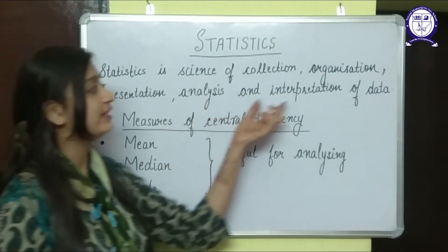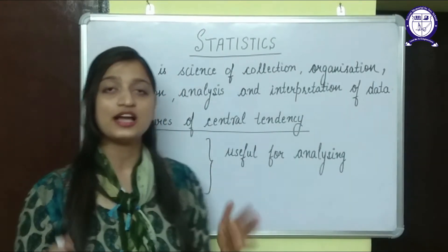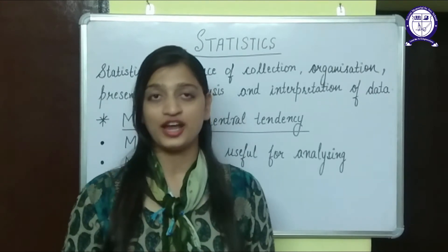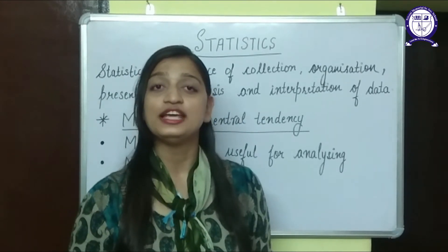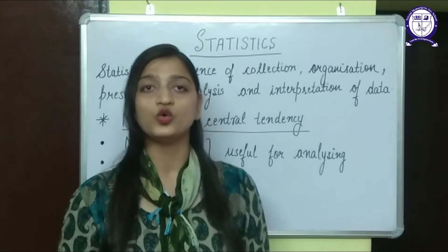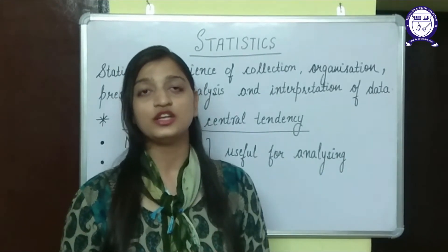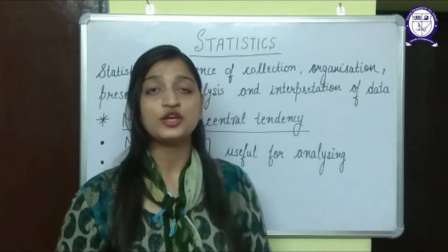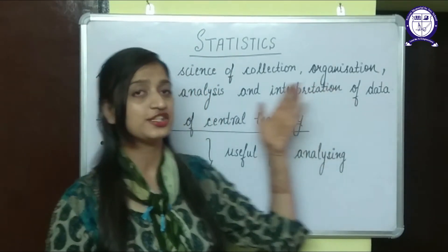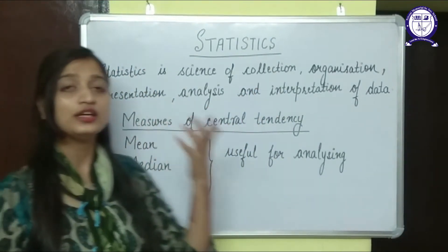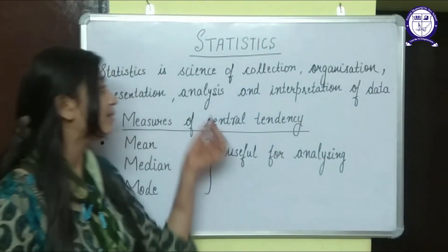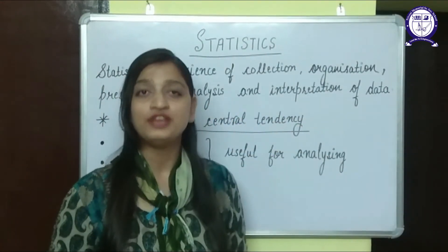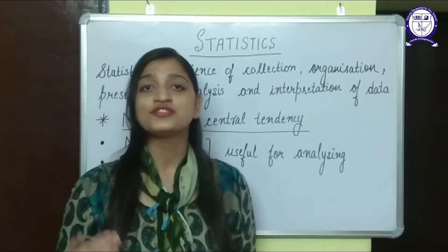Then comes analysis and interpretation of data. The data given to us — we try to analyze it, what kind of information it's trying to give us, and then we interpret it in our own words. In our previous classes we learned about frequency polygons and histogram, so we were focusing on collection, organization and presentation. Now in this class, we will be learning about analysis and interpretation of data, and to do that we have measures of central tendency.